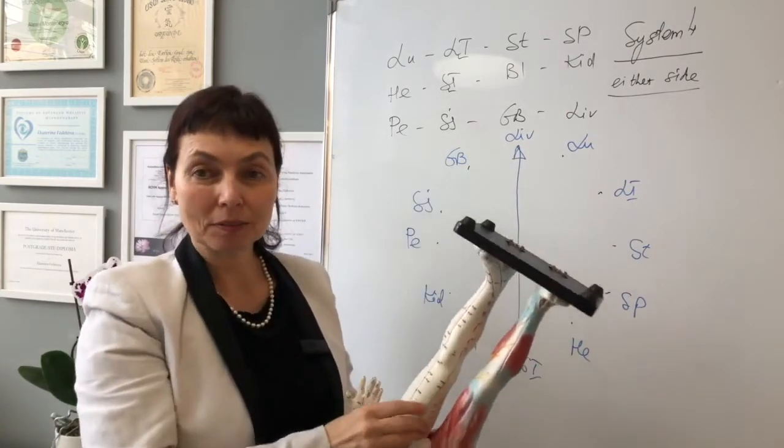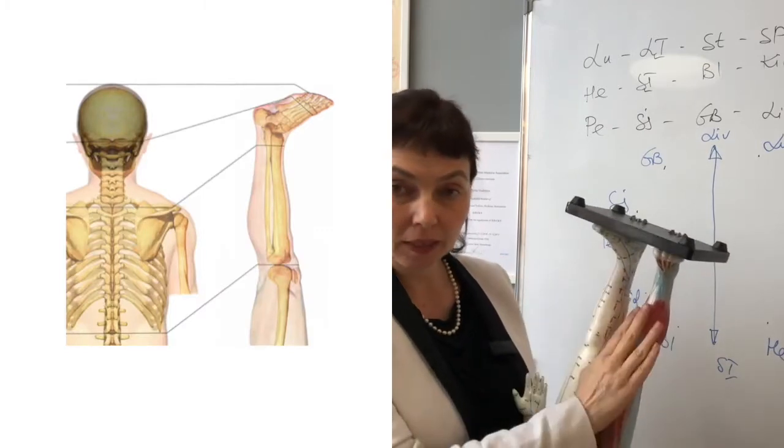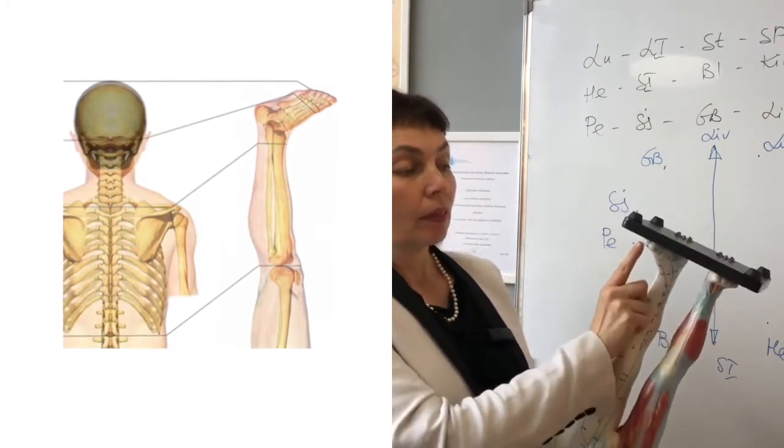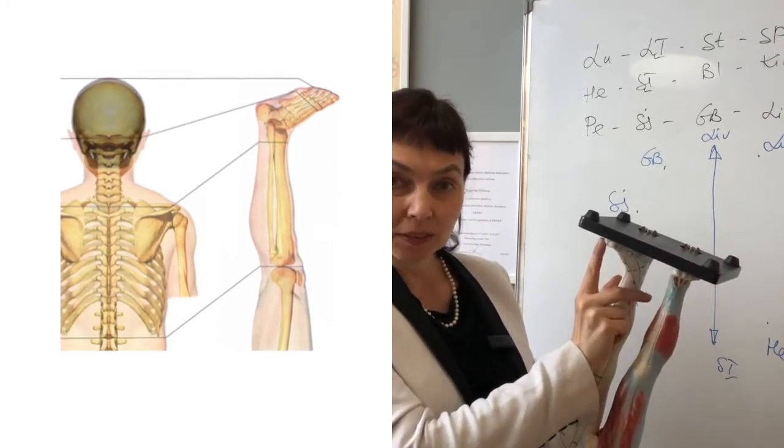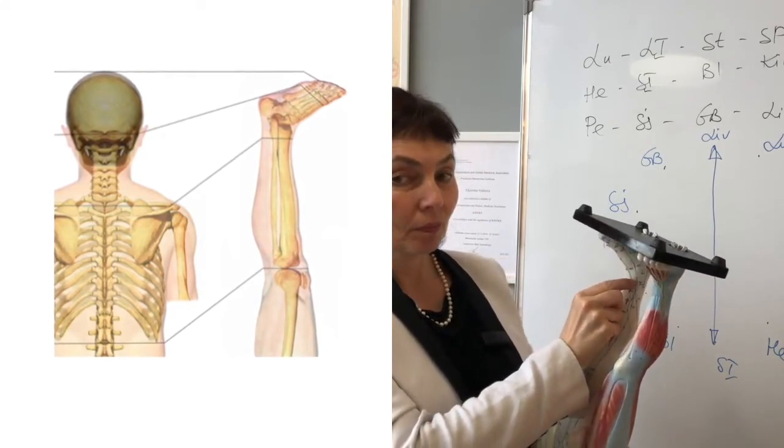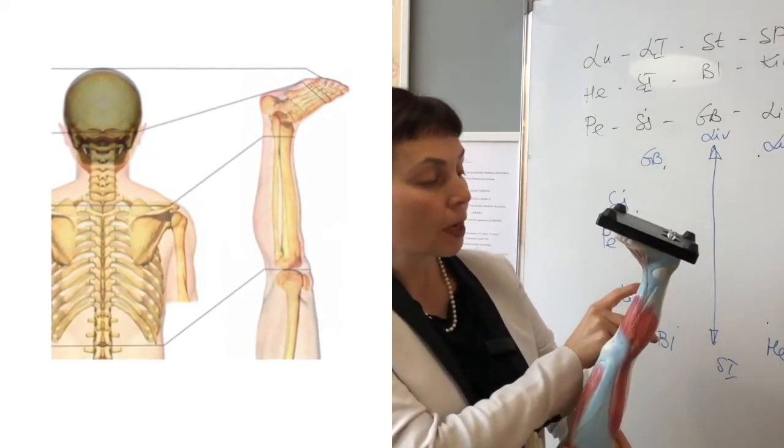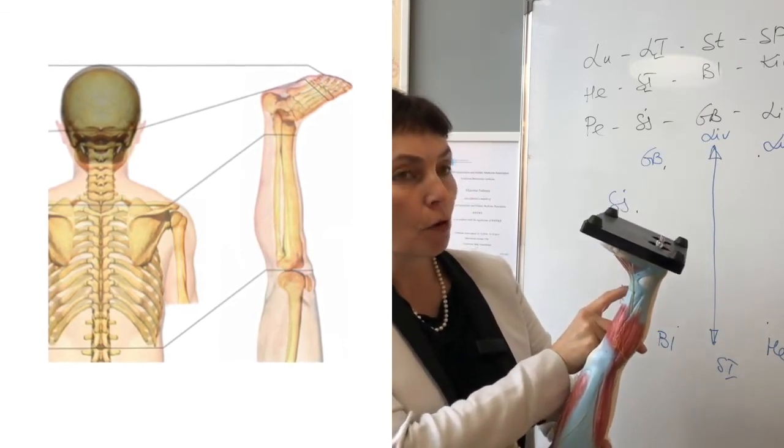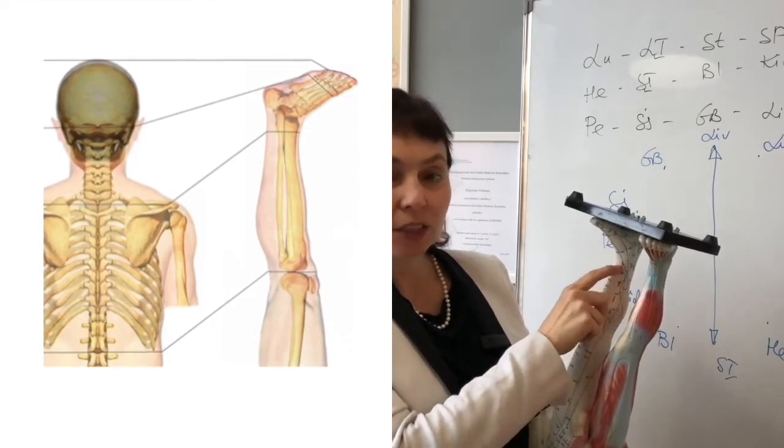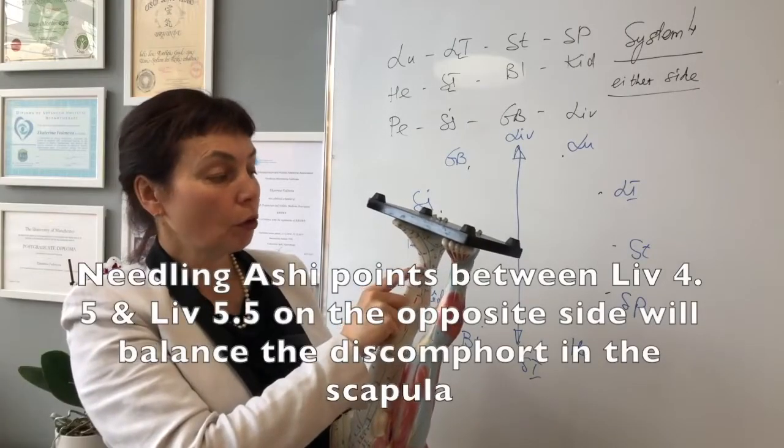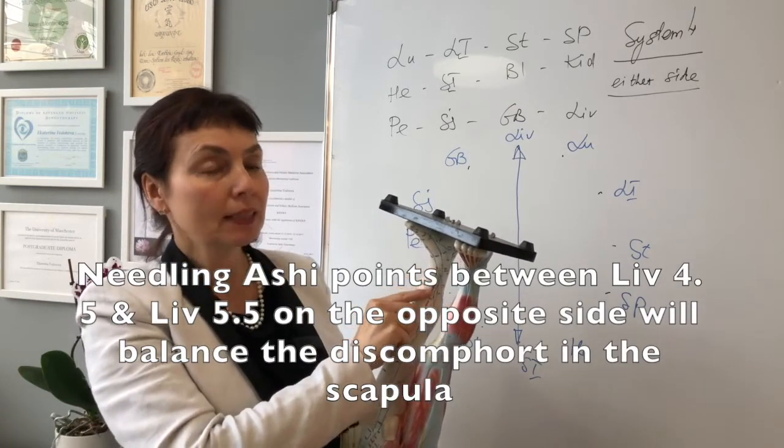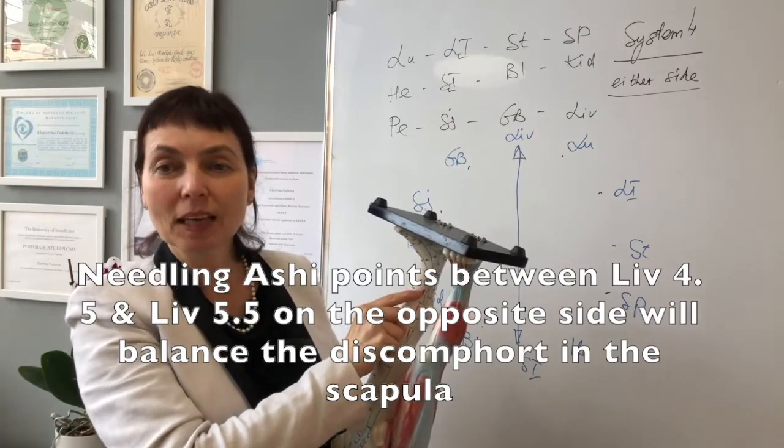If we project the trunk or the body onto the leg—which leg? Any leg, left or right. The metatarsals will be the head. This is the neck. This is the shoulder. And somewhere around Liver 4-5 starts the scapula. And if we needle the shin bone down Liver 4-5 and slightly upper Liver 5, that will balance the pain in small intestine in the scapula.